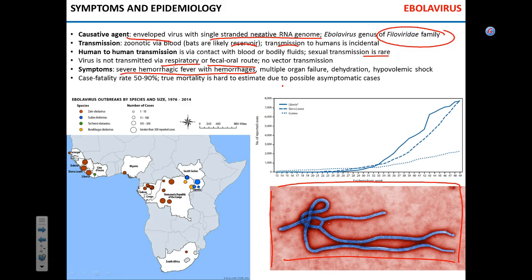The main symptom is severe hemorrhagic fever, meaning mainly internal bleeding. While you may see pictures of people bleeding from ears, eyes, and noses, the main problem is internal hemorrhages in tissue like muscle, liver, and spleen, which may lead to organ failure. The hemorrhaging causes blood plasma to spill into tissue, reducing blood volume and leading to hypovolemic shock and decreased blood pressure.